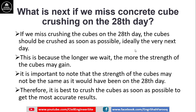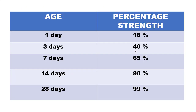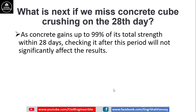Therefore, it is best to crush the cube as soon as possible to get the most accurate and acceptable results. This table shows the percentage of strength concrete gains over time. On day 1, concrete gains 16% of its strength; on day 3, it gains 40%; and by day 28, it gains up to 99% of its total strength. Since concrete reaches approximately 99% of its total strength within 28 days, testing shortly after this period will not significantly affect the results.